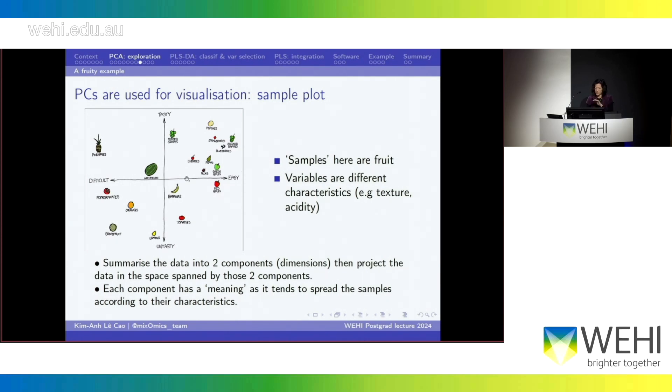So, for example, here, the major source of variation that has been extracted from those components is how easy or difficult a fruit is to eat. So, that would be the meaning of the first component. So, the horizontal, the x-axis. And the second meaning of the component would be how tasty it is for humans. So, usually, they have a meaning like that. And so, you can see, for example, all these fruits are actually easy and tasty. And all these fruits are difficult and not tasty, for example. So, this is how you can start to interpret your sample plot.